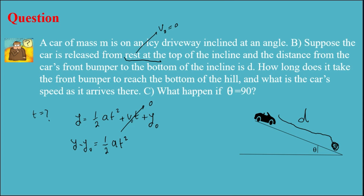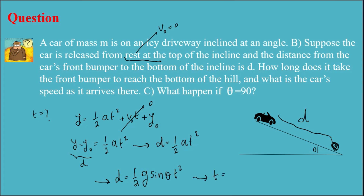That simplification doesn't change the answer. The displacement here is D, so D equals one-half A t-squared. From part A, A equals g sine theta, so substituting: D equals one-half g sine theta times t-squared. Solving for t, my answer is t equals the square root of 2D divided by g sine theta. That's my final answer for part B.